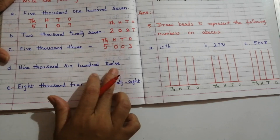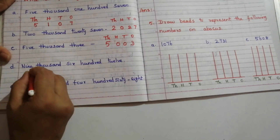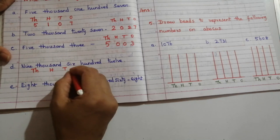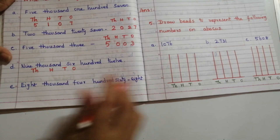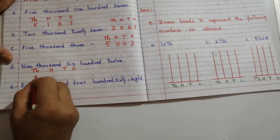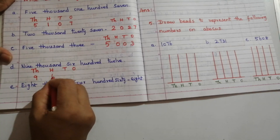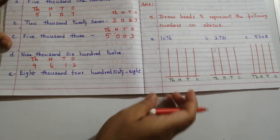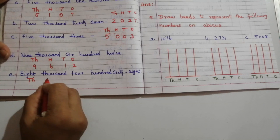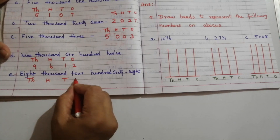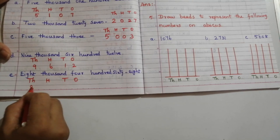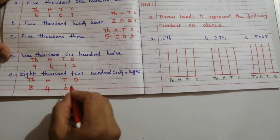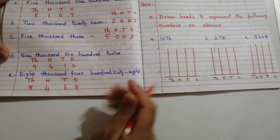Next: 9612 — 9000 in thousands, 6 in hundreds, 1 in tens, 2 in ones — giving 9612. And 8468 — write thousands, hundreds, tens, ones — giving 8468.